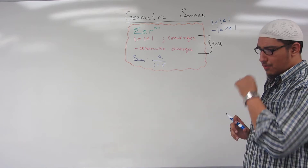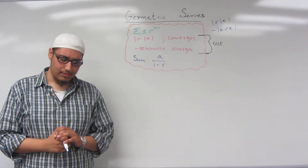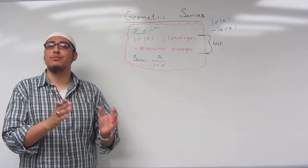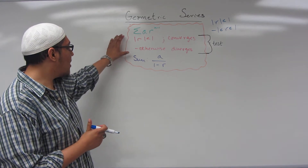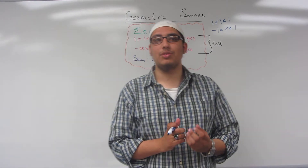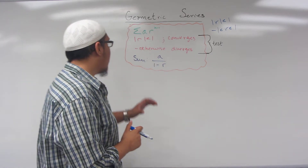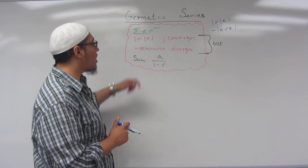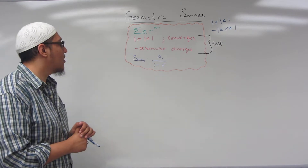The series diverges otherwise. In our introductory video for infinite series, we talked about how the series can be broken down into terms that we can add together — those are called partial sums. When the series converges, if you add up all the partial terms, you'll get a total sum of the series. If the series converges, then the sum can be represented by A divided by 1 minus R, where A and R are both constant terms.